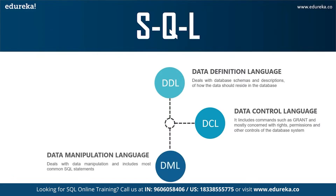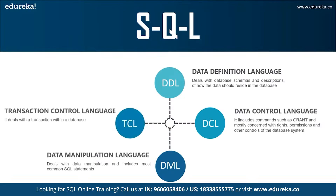The next command is DML, that is Data Manipulation Language. It allows you to access and manipulate data — insert, update, delete, and retrieve data from the database. The insert command is used to insert data into a table, update is used to update existing data within the table, and delete is used to delete records from the database. The final command is TCL, that is Transaction Control Language, which allows you to deal with the transaction of the database. A few TCL commands are commit, rollback, savepoint, and set transaction.